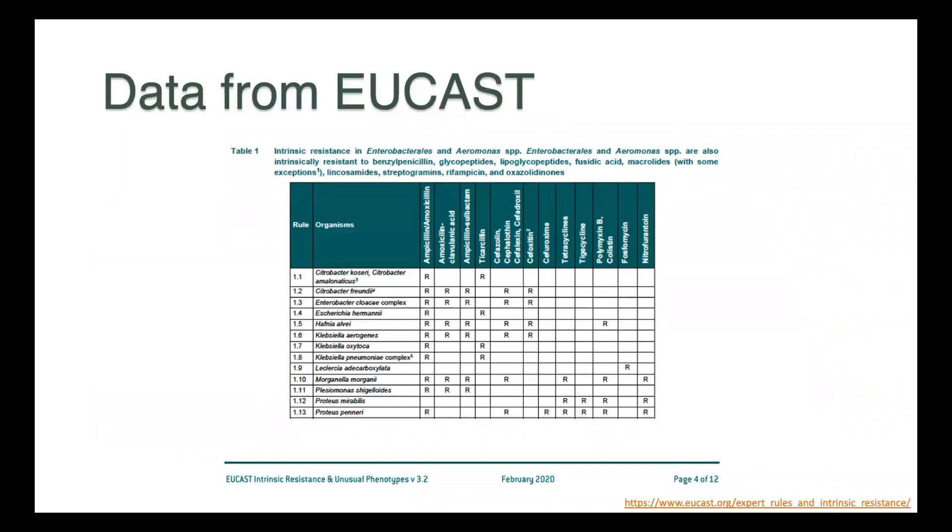This is an example of some data from EUCAST. Here you can see in this intrinsic resistance table for the Enterobacteriales and Yersinia. At the top, there's a description of which drugs the entire group is resistant to. So intrinsic resistance to benzylpenicillin, the glycopeptides, fusidic acid, macrolides, lincosamides, etc., is expected for all of these bacteria.